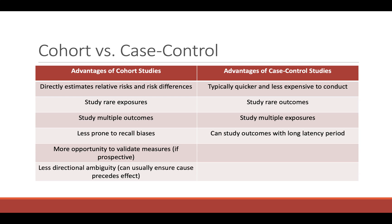Comparing advantages of cohort and case control studies: cohort studies directly estimate relative risks and risk differences, are good for studying rare exposures, and allow you to study multiple outcomes since patients are selected on exposure rather than outcome. They are less prone to recall biases, offer more opportunity to validate measures if prospective, and have less directional ambiguity — you can usually ensure that cause precedes effect.